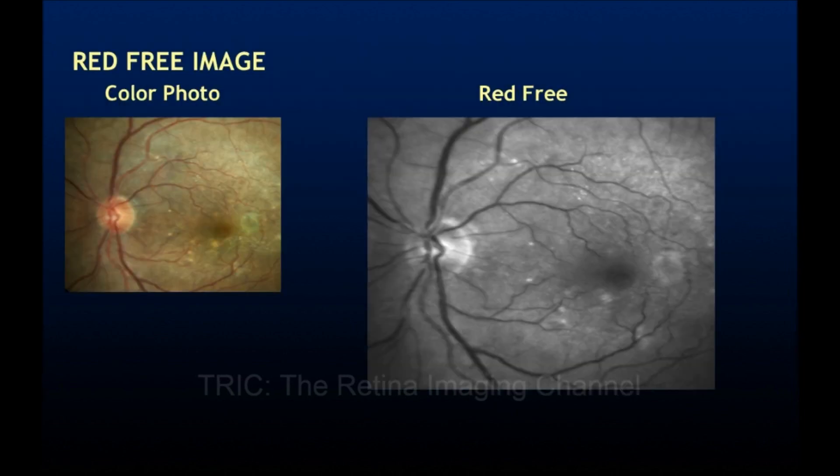We begin with the red free image. This is how a normal color fundus photo and its red free image look. The vessels appear black, while the retina and optic nerve are gray in color. Red free images are used to visualize superficial retinal structures.